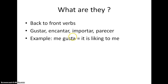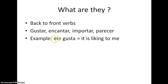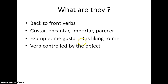So that's what controls the end of this verb — 'it is liking to me.' This is why we don't have an O on the end of 'me gusta' like we would for normal present tense verbs, because that O is the present tense ending for I. So it would be 'I am liking to me' — literally 'I like myself.' So it's controlled by the object, not the subject (the person liking in English), but the thing that's being liked.